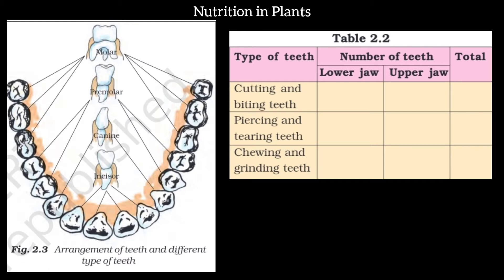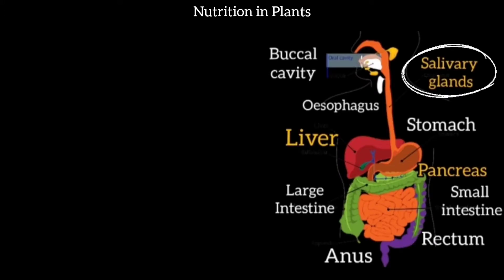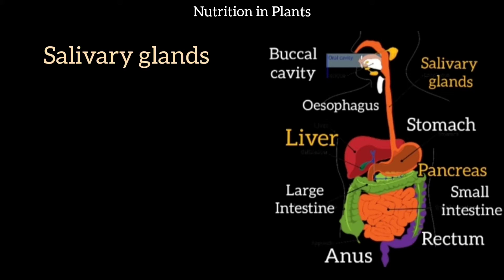After the teeth — the molars and pre-molars — we use these for chewing. In the mouth, we also have salivary glands. The salivary glands secrete saliva, which mixes with our food and helps break it into smaller parts so that we can swallow it.